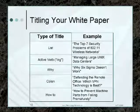Now, in terms of titles, here are just some of the title conventions for a bait piece. One is simply the list. One way to organize a content document — the easiest way to write it and very easy for readers — is to just make a list. For example, '14 Steps to a Winning Business Presentation' or 'The Top Seven Security Problems of 802.11 Wireless Networks.' A list title works very well.